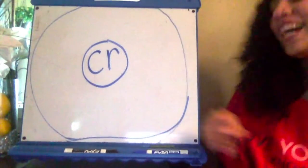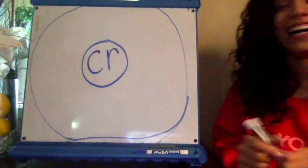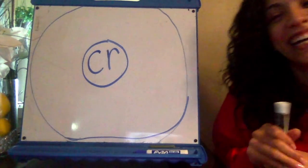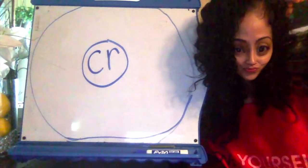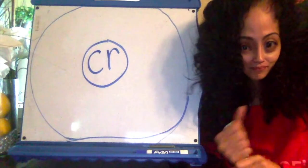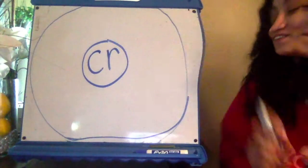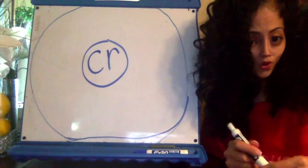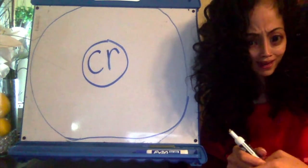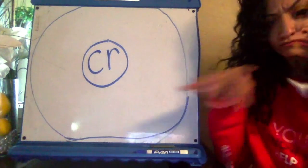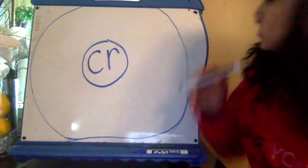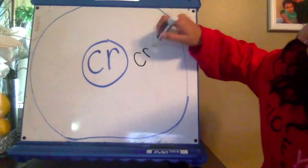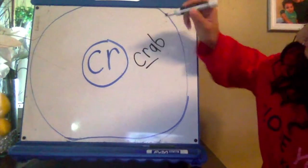Alright, here we go. I cracked myself up! We have CR here. What types of words do we know that have that C-R sound? Remember the move: C-R-A-B. So we're going to start out with C-R-A-B.